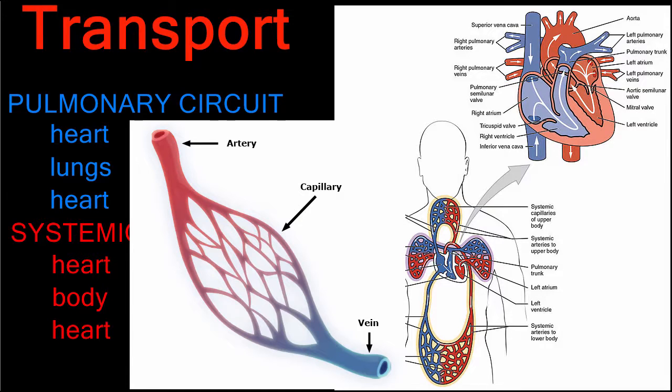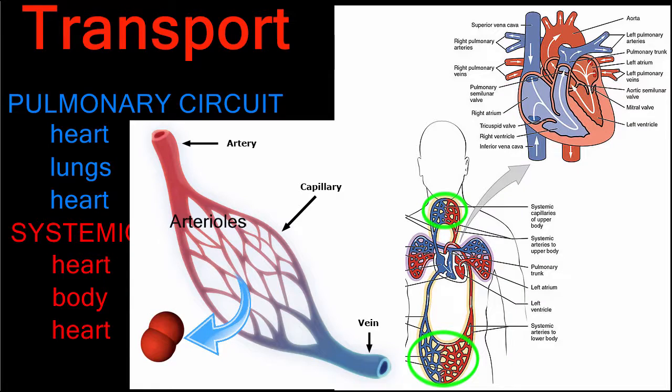Throughout the body, the arteries branch to become arterioles and then capillaries. The capillaries deliver blood to every single cell in the body. Here, the blood drops off the oxygen brought in by the lungs and picks up carbon dioxide and other wastes.